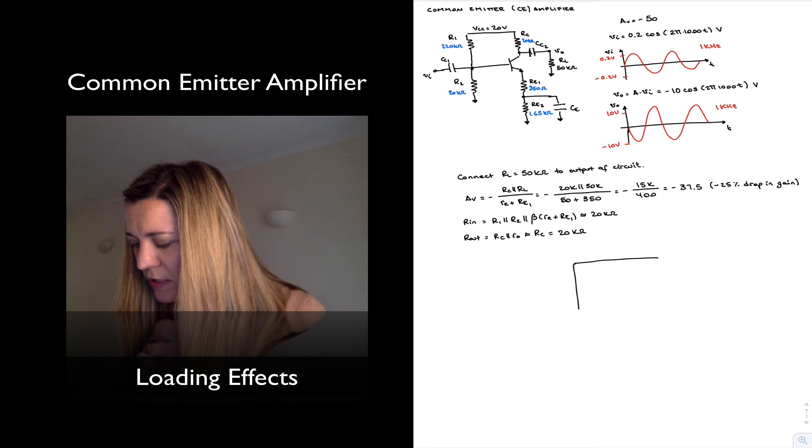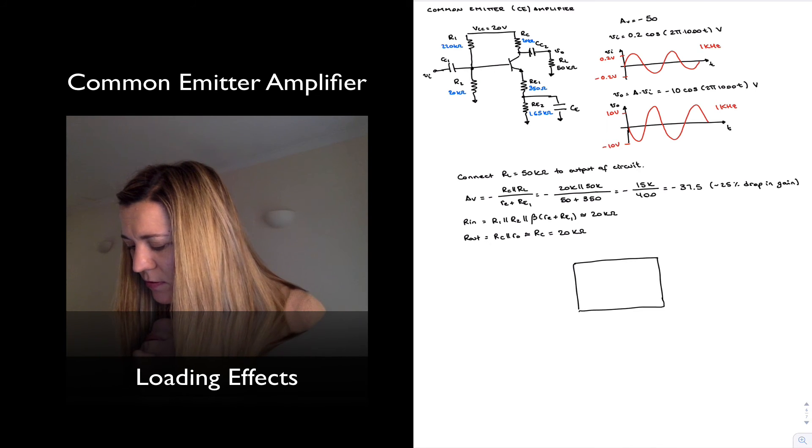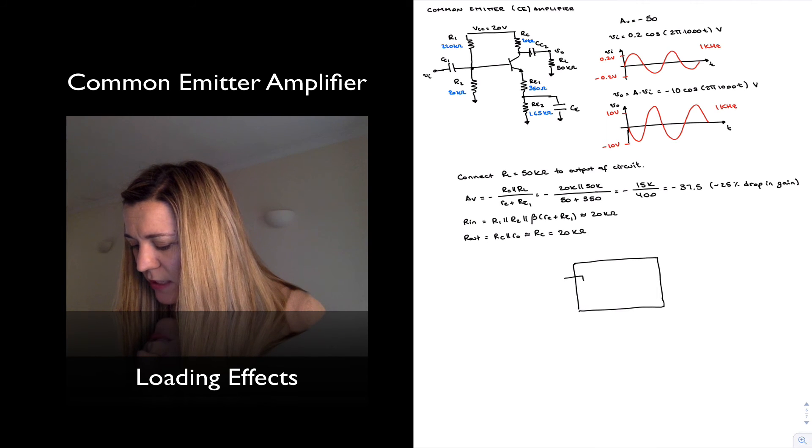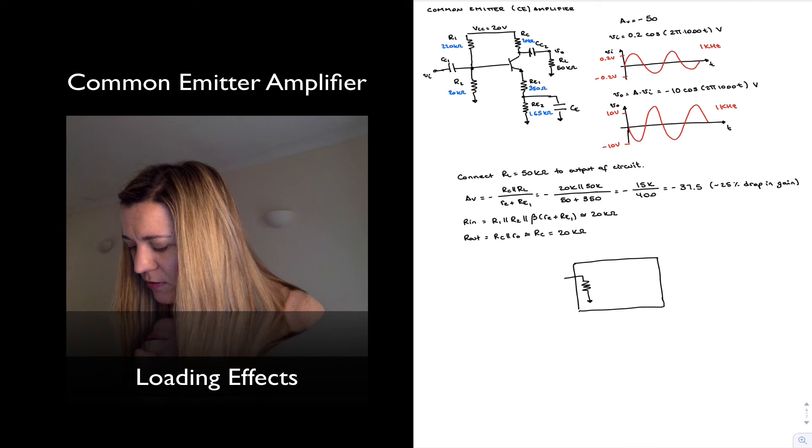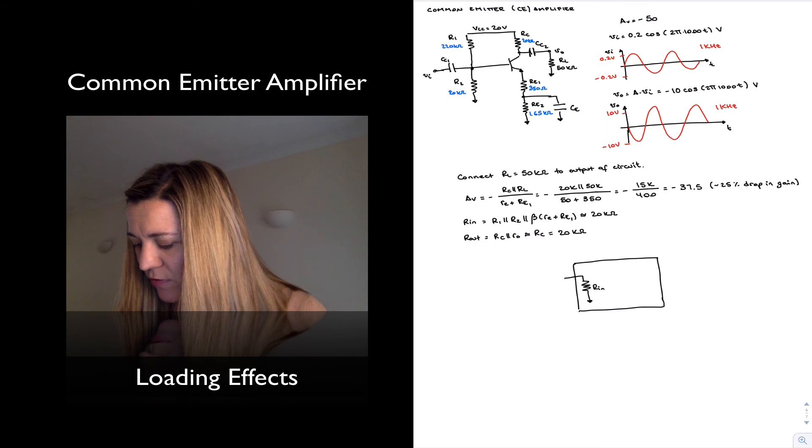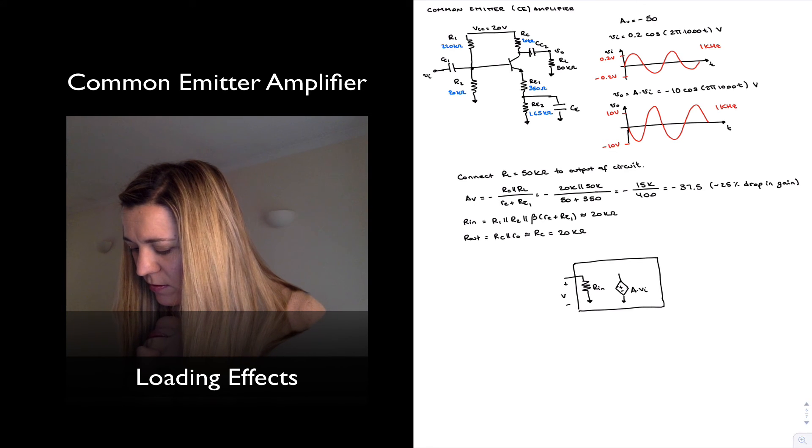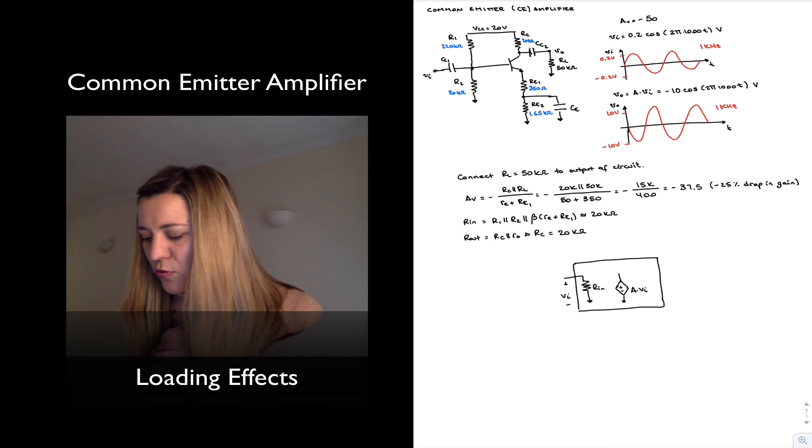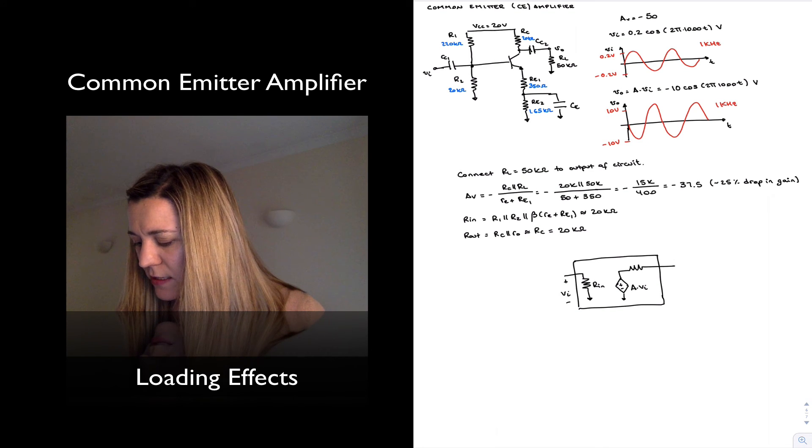So when I look at the model for this amplifier, what I have is a voltage amplifier would typically represent with the following block diagram, an input resistance, an ideal dependent voltage source, A times V in, V in being the voltage across the input resistance, and then an output resistance R out.